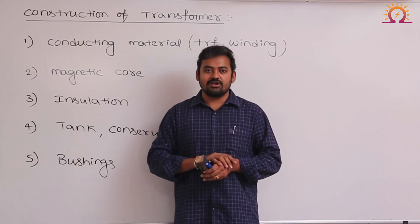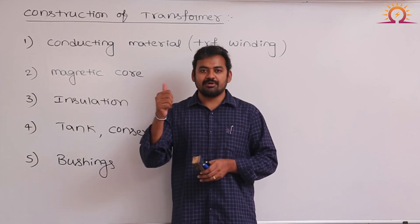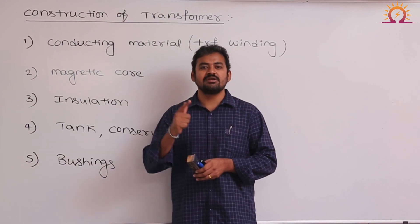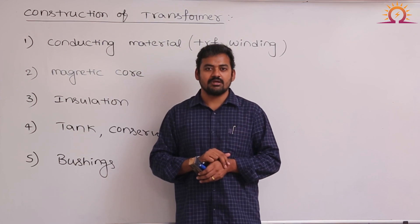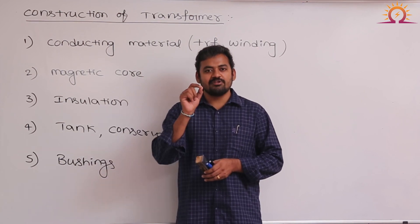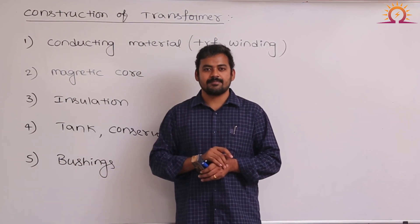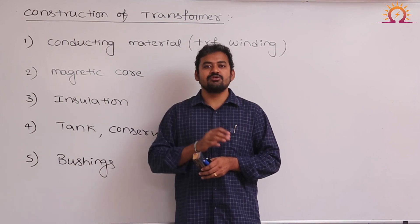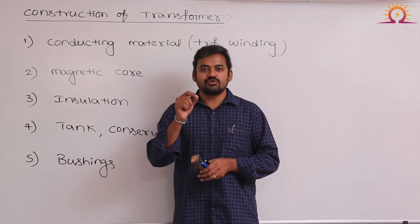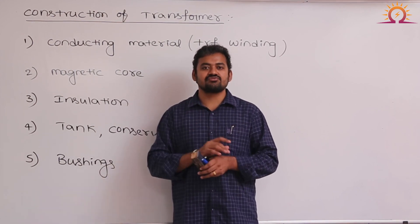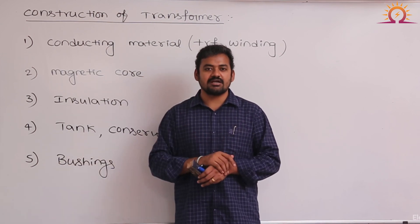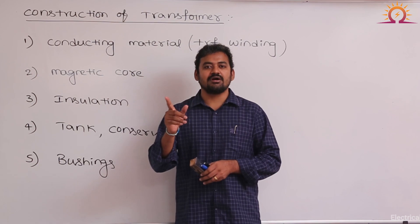The common power losses in any electrical machine are copper losses and iron losses. If it is a rotating electrical machine, frictional and windage losses will also be there. To improve efficiency, losses must be minimum, and one of the major losses is copper loss. Copper loss is mainly due to the resistance offered by conducting parts. To minimize copper losses, we must design a transformer using low resistance conducting material, and the best conducting materials are copper and aluminum.